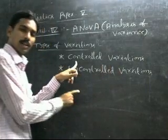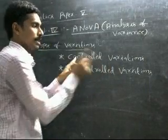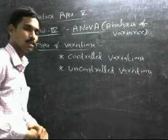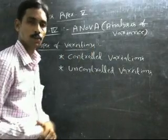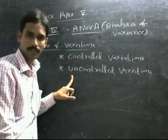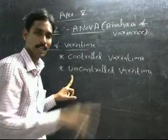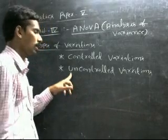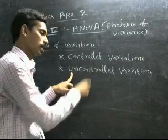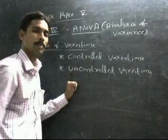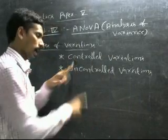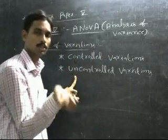Controlled variation is also called assignable causes, which can be detected and measured by human, hence they are controlled by human. Uncontrolled variations are obtained in any experiment at any stage and are also called chance causes, which are beyond human control — meaning they cannot be controlled by human.